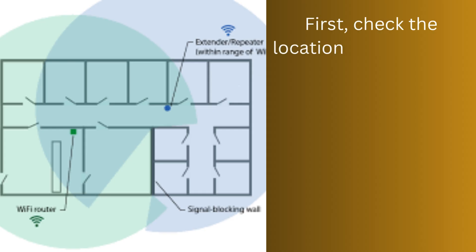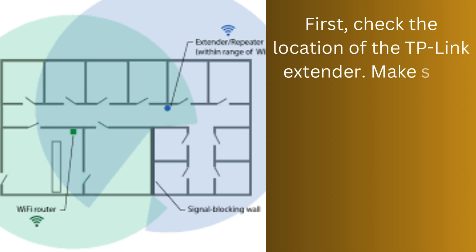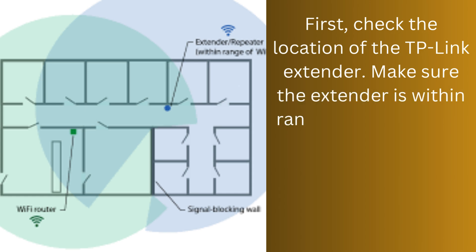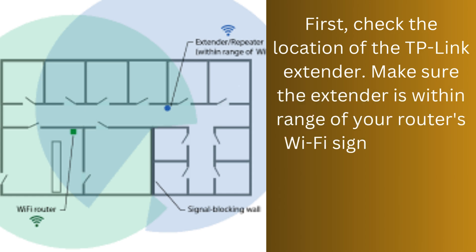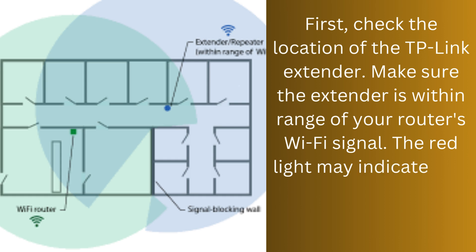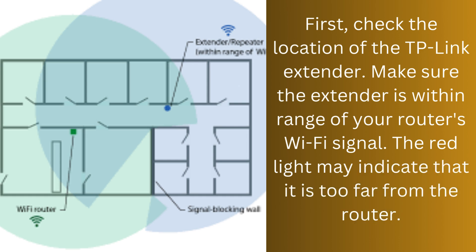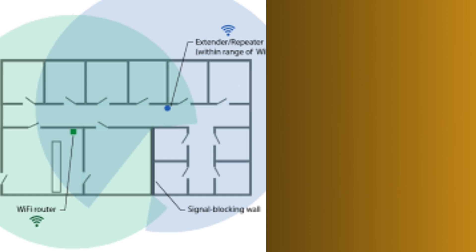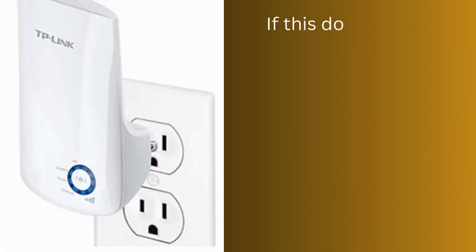First, check the location of the TP-Link extender. Make sure the extender is within range of your router's Wi-Fi signal. The red light may indicate that it is too far from the router.